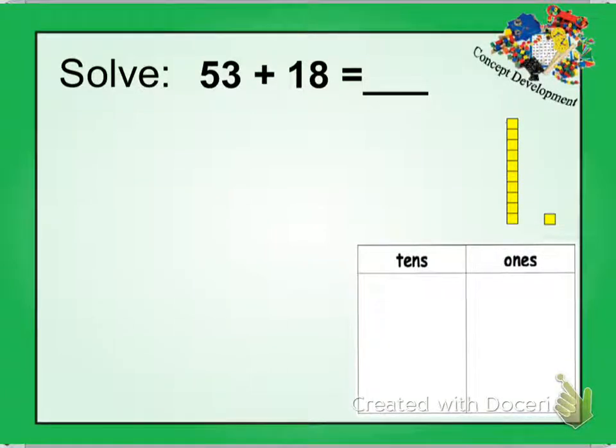Hi guys, Miss Davis here. Today we're talking about Module 6 Lesson 16. In this lesson we're talking about being able to add a pair of two-digit numbers when the ones digit has a sum that's greater than 10.